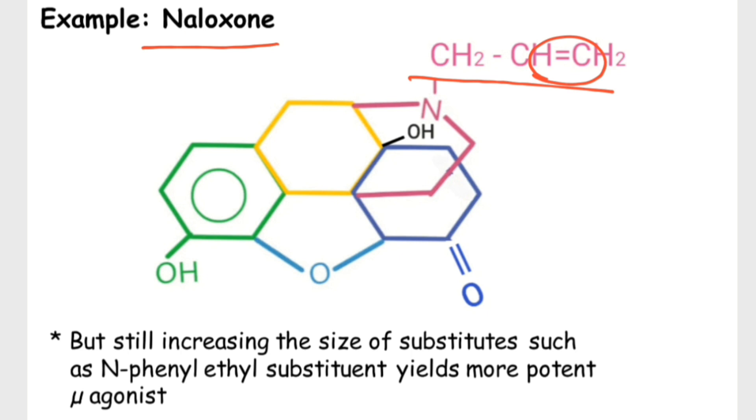However, increasing the size of the substituent — such as an N-phenylethyl substituent — yields a more potent mu agonist.